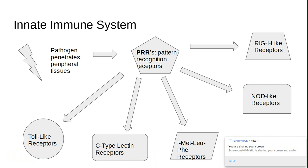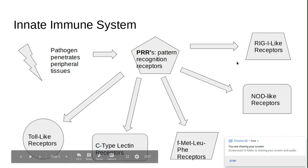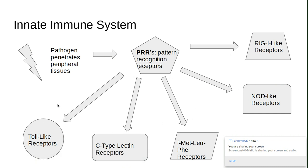PAMPs are evolutionarily conserved DNA within the microbial invaders. These receptors can be a variety of different things, as you can see. We have the toll-like receptors, which are expressed as membrane-bound and cytoplasmic receptors, and they detect a large number of viral, bacterial, fungal, and parasitic PAMPs.